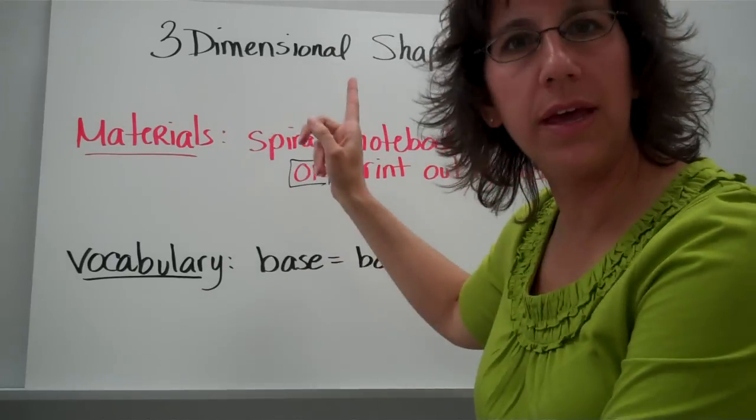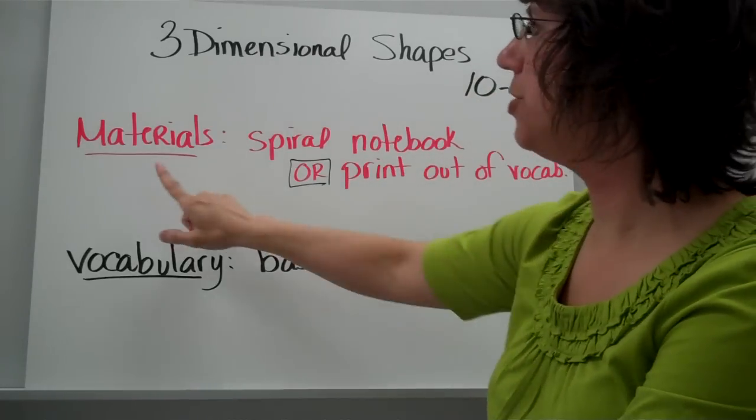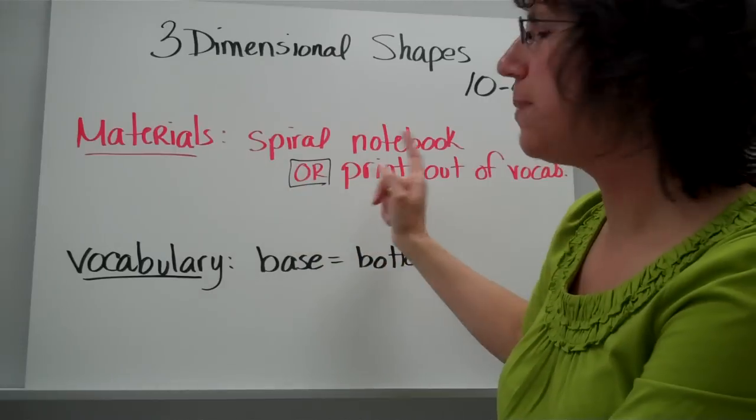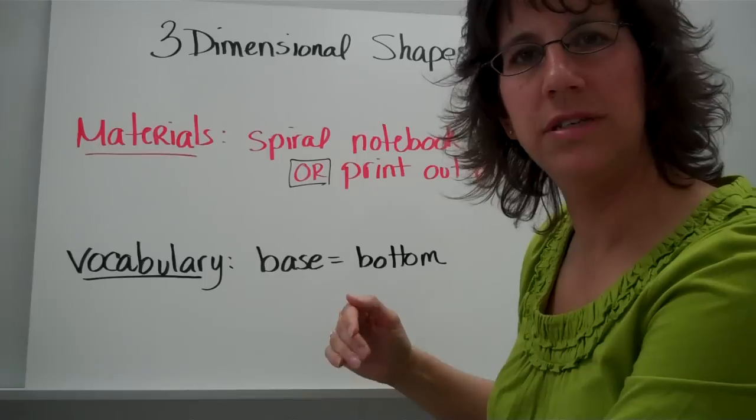So three-dimensional shapes, and the chapter is chapter 10, lesson four. The materials you're going to need: your spiral notebook, you could simply copy down the vocabulary words and all of the pieces of information.